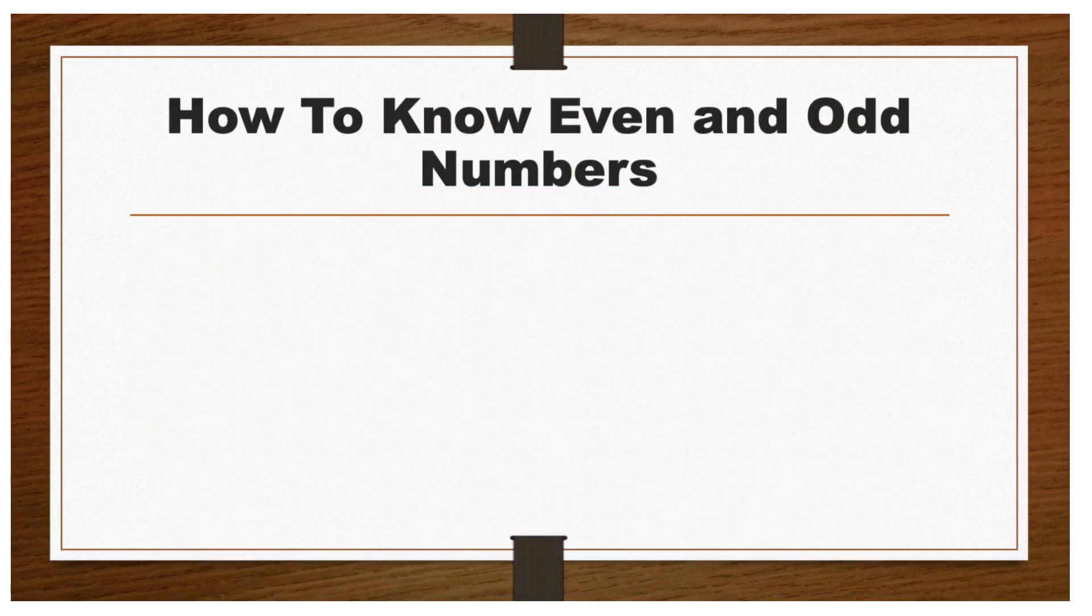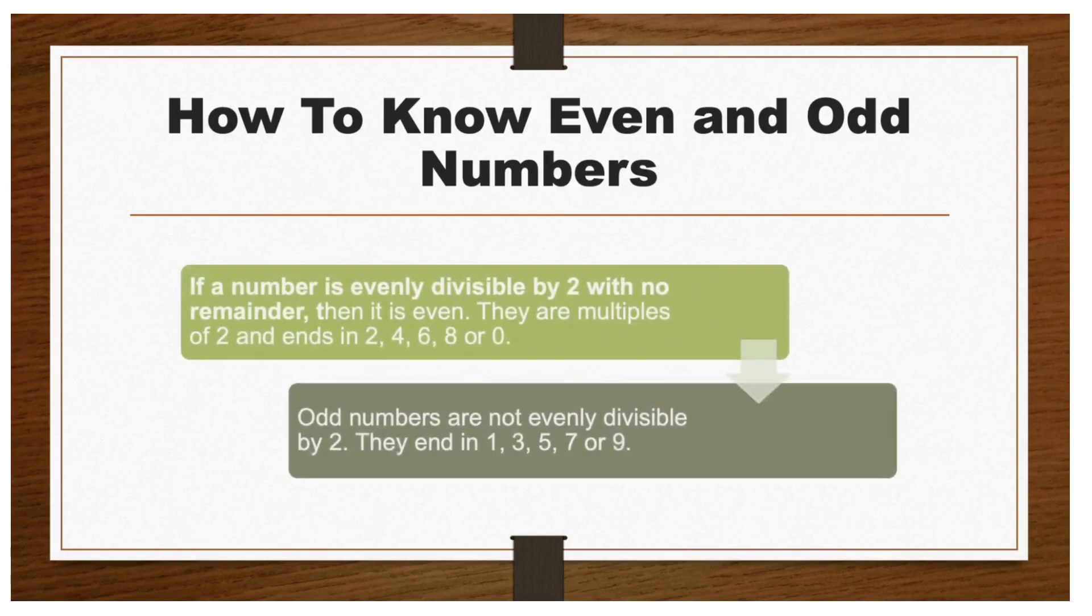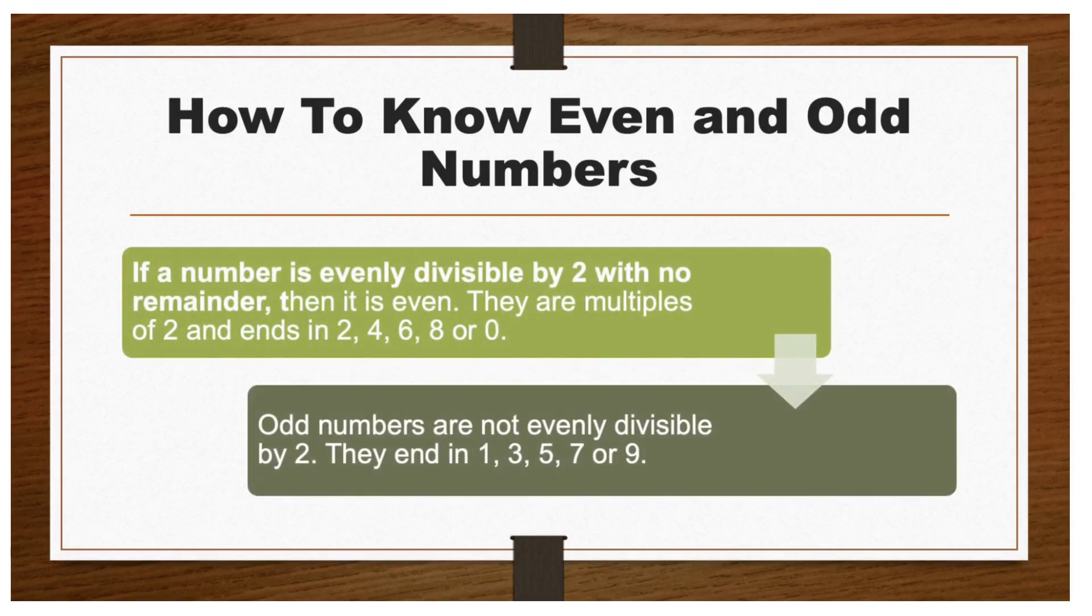How do we know even and odd numbers? If a number is evenly divisible by 2 with no remainder, then it is an even number. They are multiples of 2 and end in 2, 4, 6, 8, or 0.